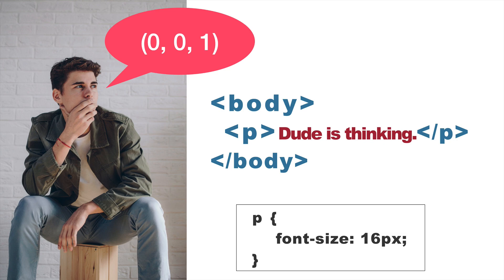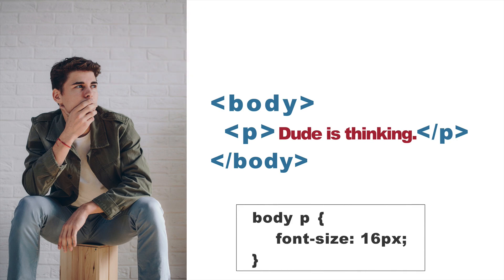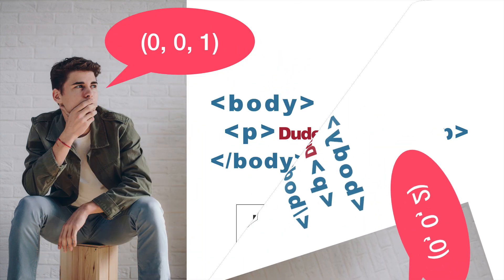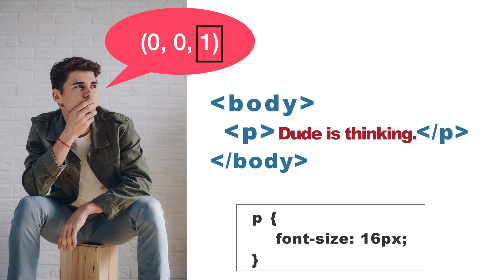In this next example, we have the same HTML, but in the CSS we're using two element selectors — body and then p — which means apply font-size 16 pixels to any paragraphs within a body tag. Since we now have two element selectors, we add those up and put them in the third column: still no IDs, no classes, but two element selectors, giving us 0, 0, 2. This CSS declaration would be considered more specific than the previous one where we only had one element selector.